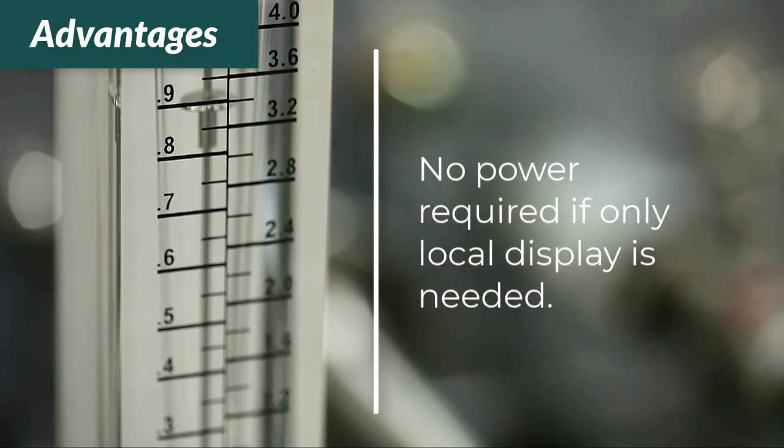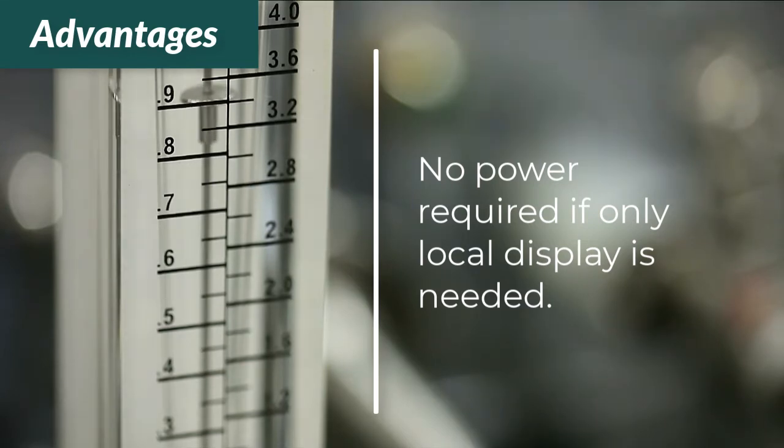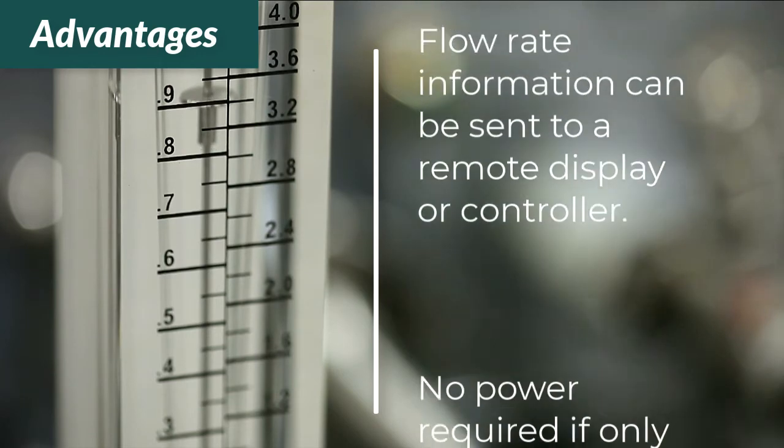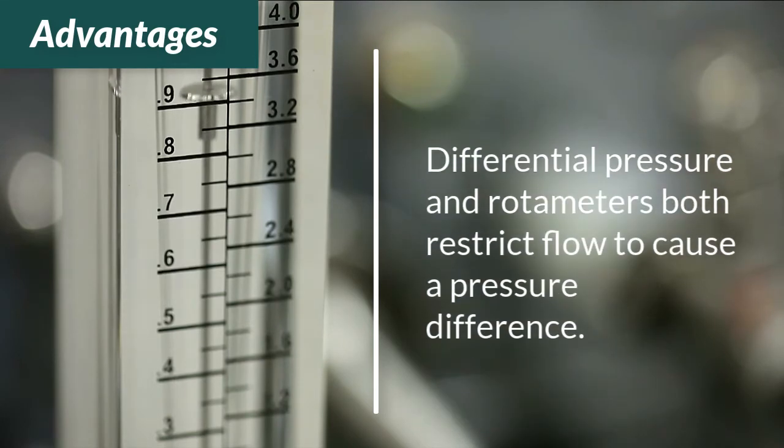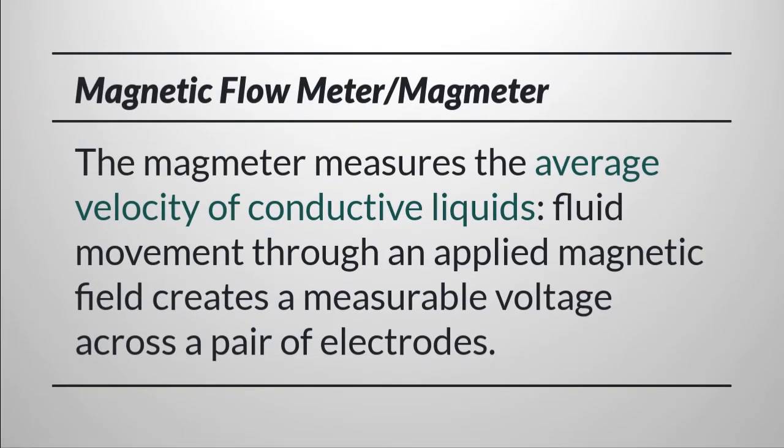If only local display is needed, no power is required as the float position can be seen through a transparent tube. The float can be magnetically coupled to a dial indicator or an electronic transmitter can be used to send flow rate information to the remote display or controller. Differential pressure and rotometers both restrict flow to cause a pressure difference. One advantage of magnetic meters and ultrasonic meters is that they don't restrict flow.